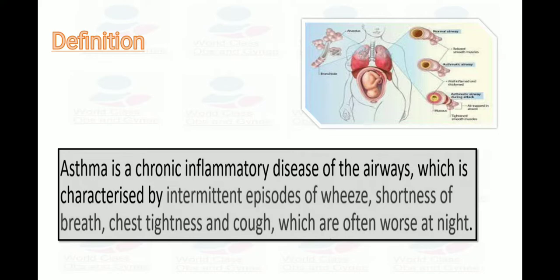Asthma is basically a chronic inflammatory disease of the airway, characterized by intermittent episodes of wheeze, shortness of breath, chest tightness, and cough, which are often worse at night.